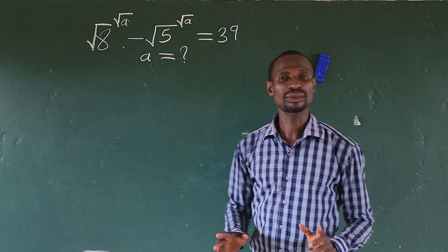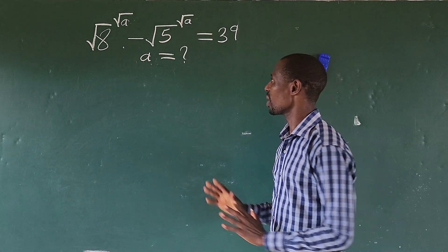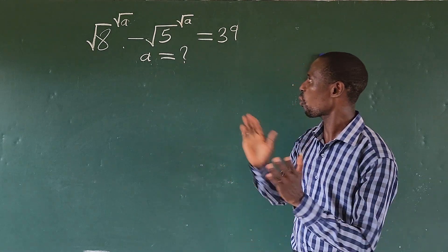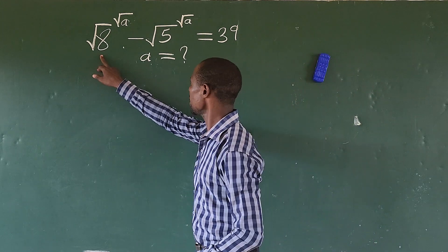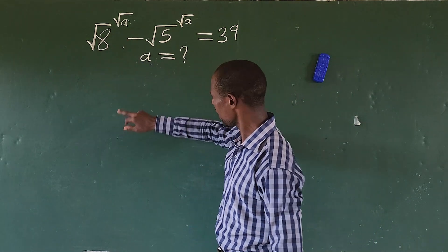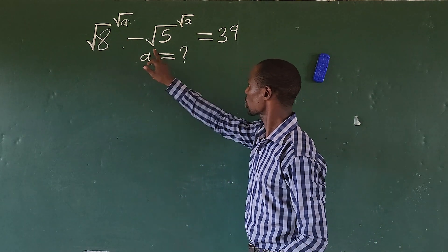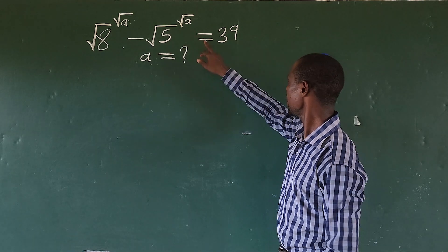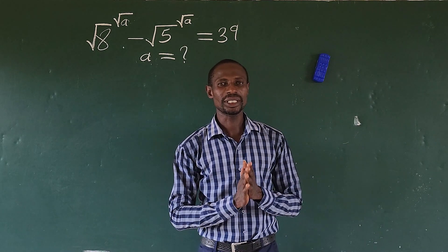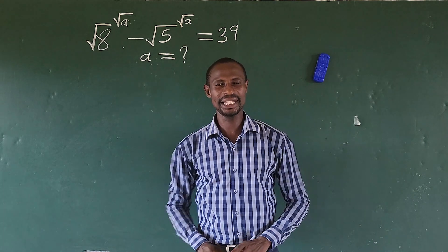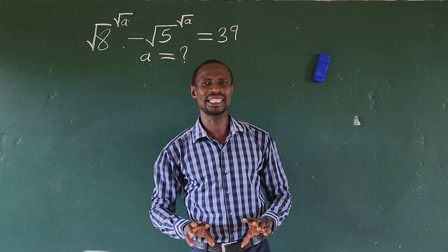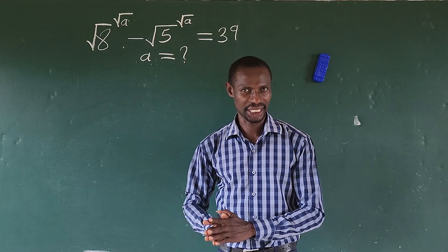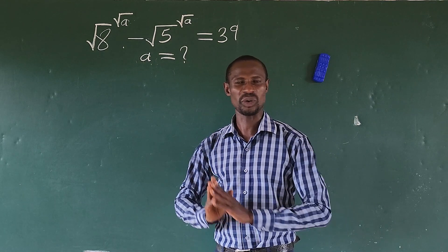Hello everyone, welcome to today's class. Today we have a Matholipe challenge on board. The question is: the square root of A to the power of the square root of A, minus the square root of 5 to the power of the square root of A, equals 39. What is the value of A that satisfies this exponential radical challenge from Matholipe?